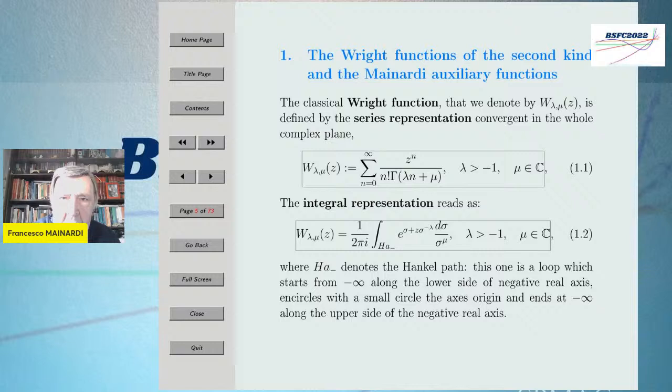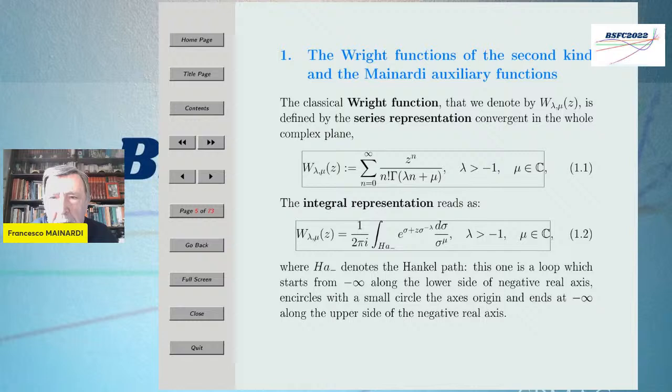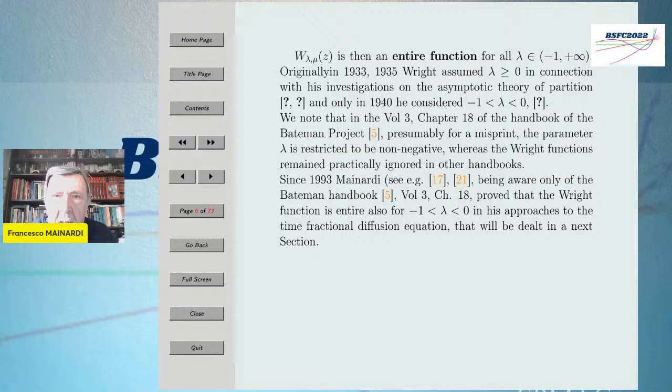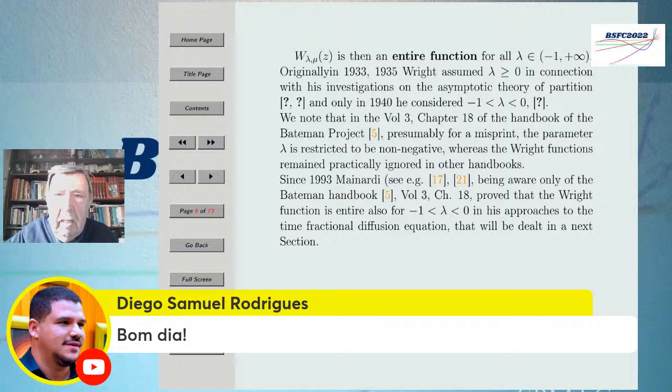I will recall what the classical Wright function is. It is practically very similar to the Whittaker function, but there is this factorial here, and this is an integral representation. Like the Whittaker function, it is an entire function. However, lambda can also be negative for the first parameter. In the middle, the first parameter is not negative — better said, it is positive.